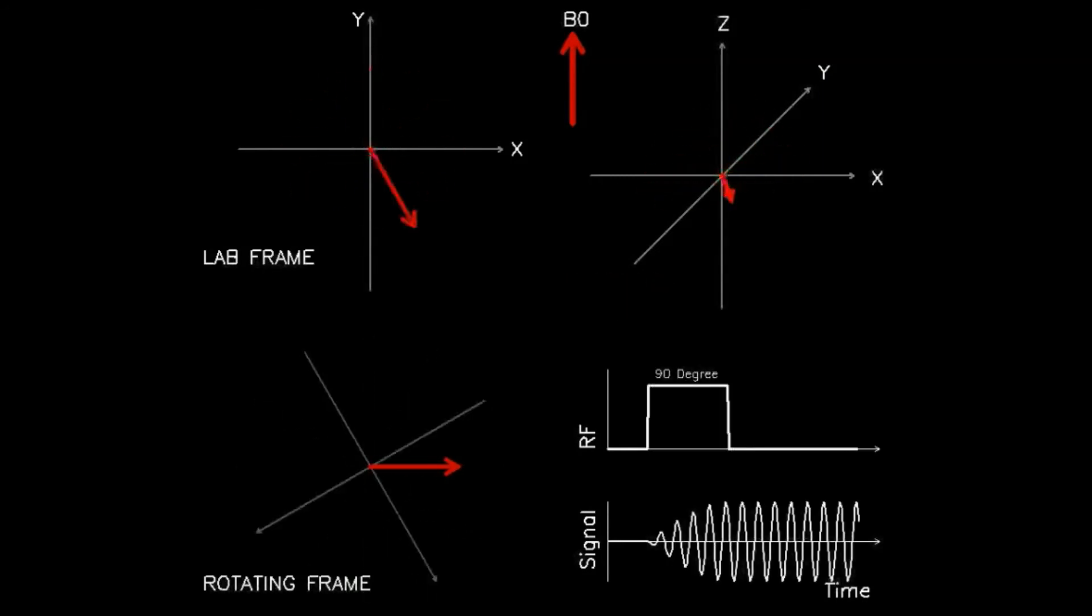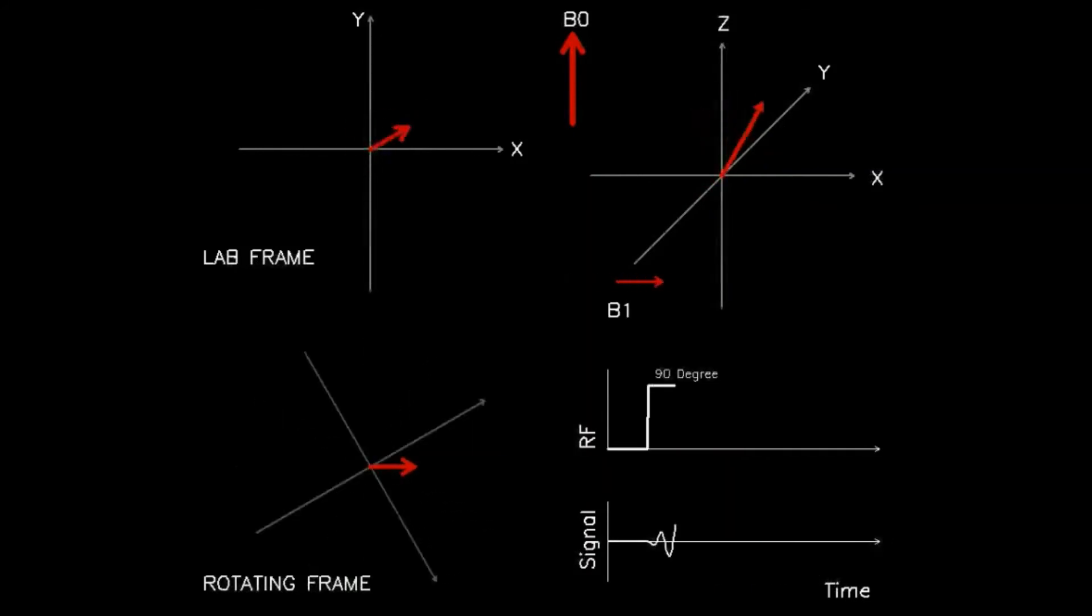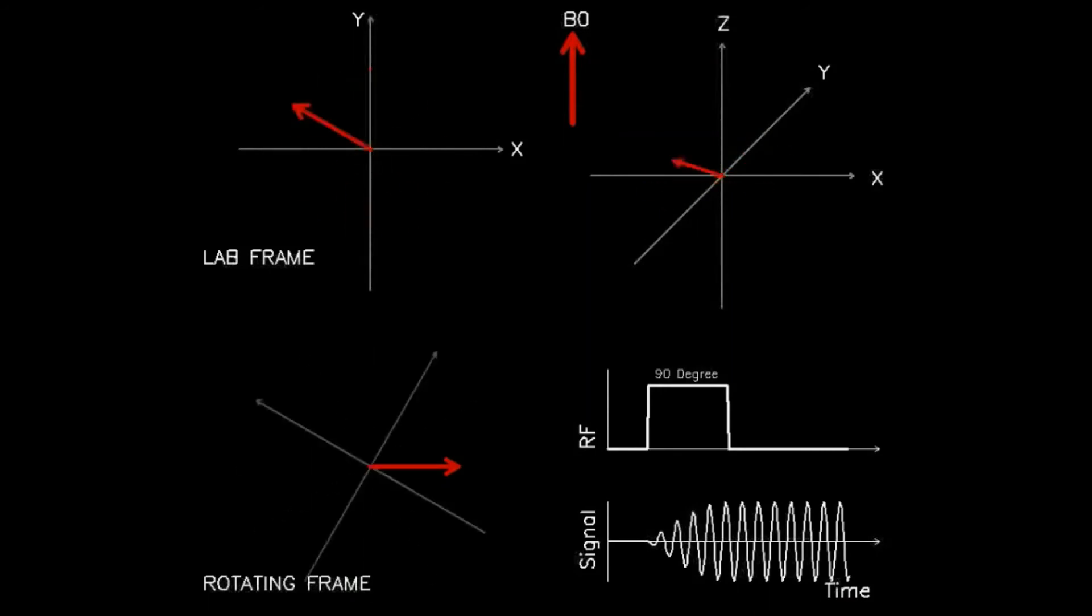As the RF power is turned on, and a 90-degree flip ensues, observe how the red arrow in the rotating frame in the bottom left panel smoothly grows to a maximum value.